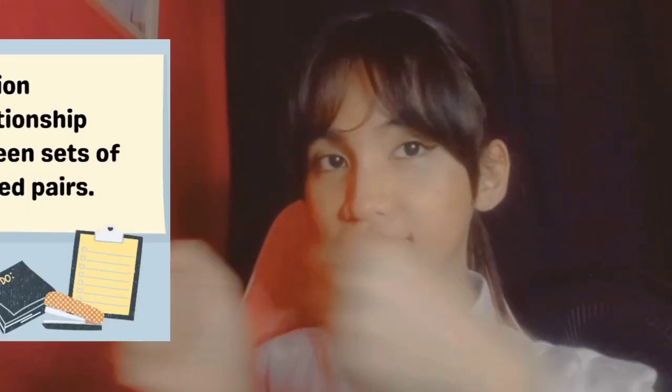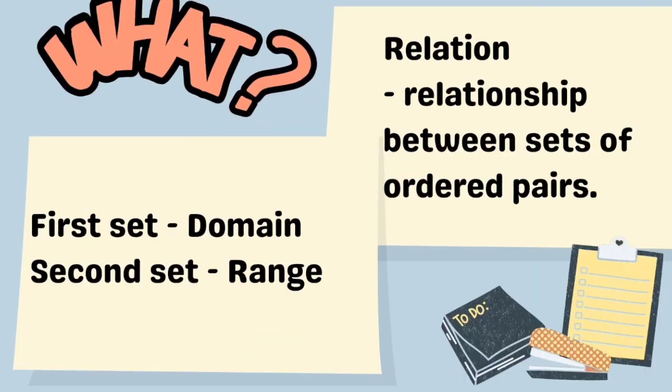First, what is a relation and a function? A relation, by definition, is the relationship between sets of ordered pairs. The first set being called the domain, and the second one is called the range.